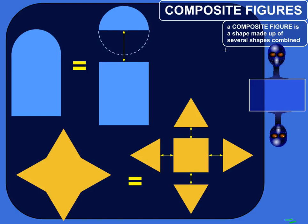All right, so composite figures, what are they? A composite figure is a shape made up of several other shapes that are put together.